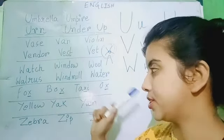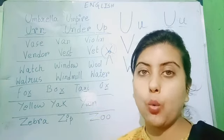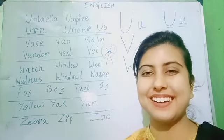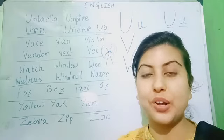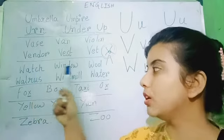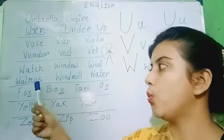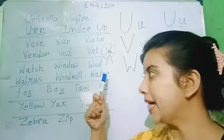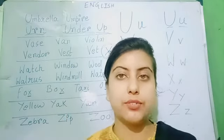Water. W-A-T-E-R. Water. Water is a thing that we drink. So, what are the words? Watch, window, wool, walrus, windmill, water. These are the words with W.